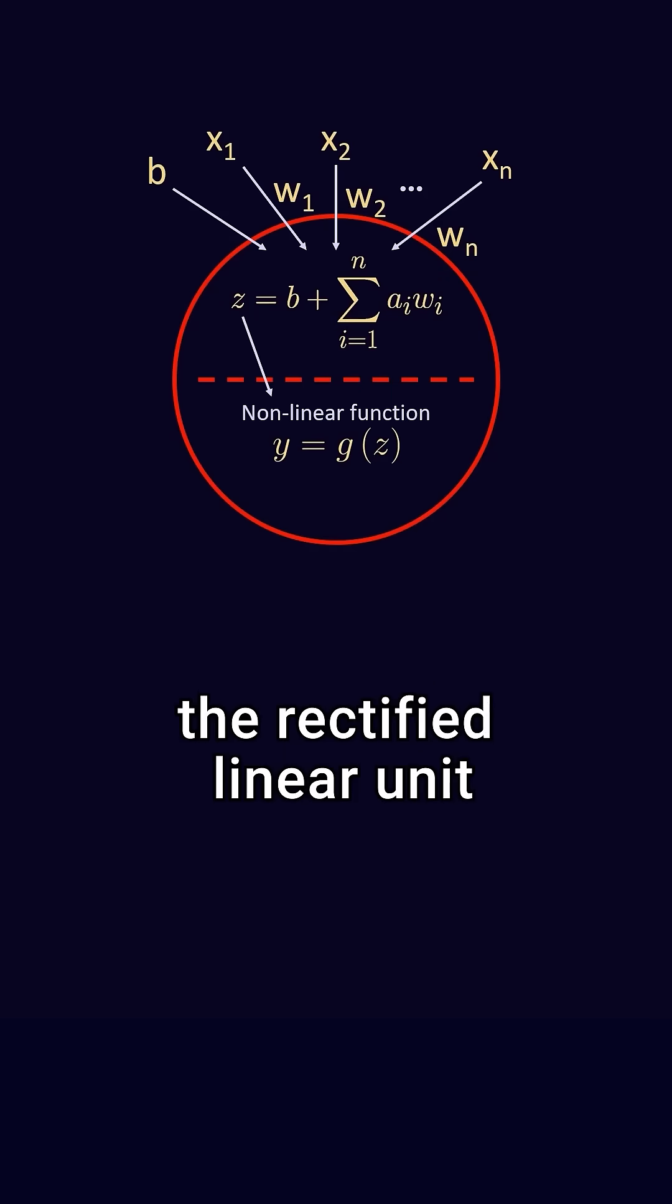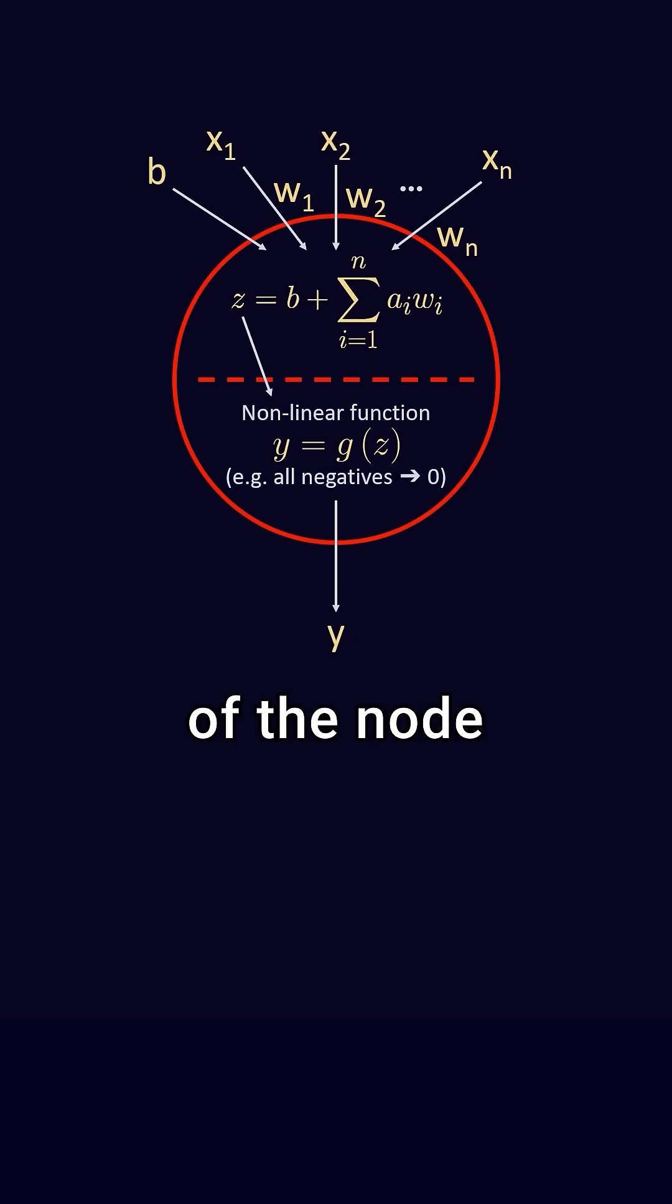This weighted sum is then passed to some nonlinear function called an activation function. One example is the rectified linear unit function, which simply converts all negative values to zero. The output of this function, a single value, is the output of the node.